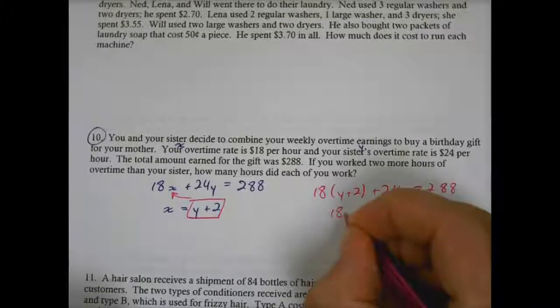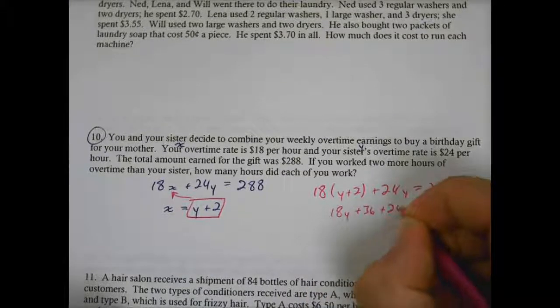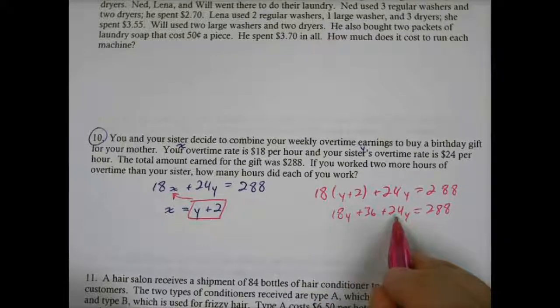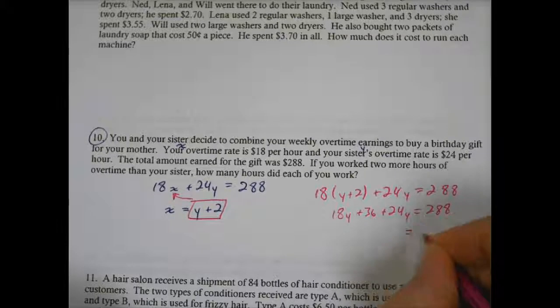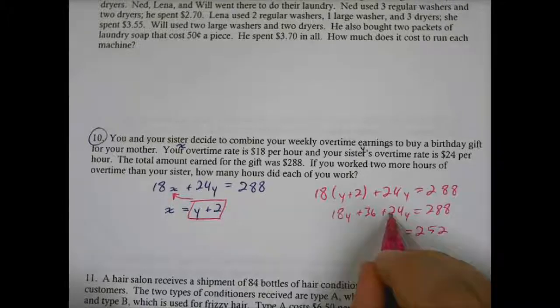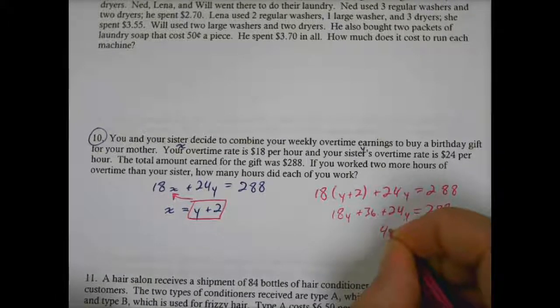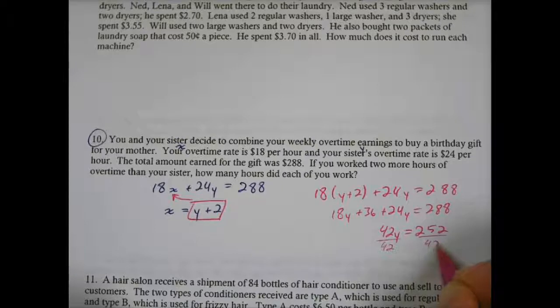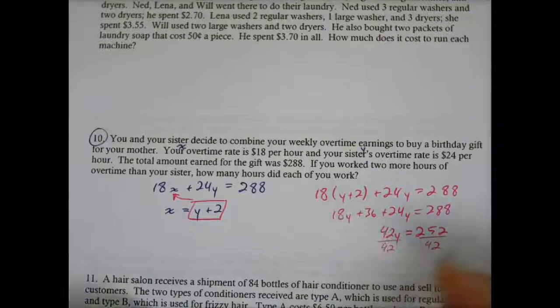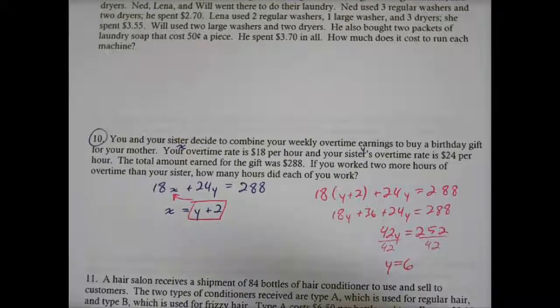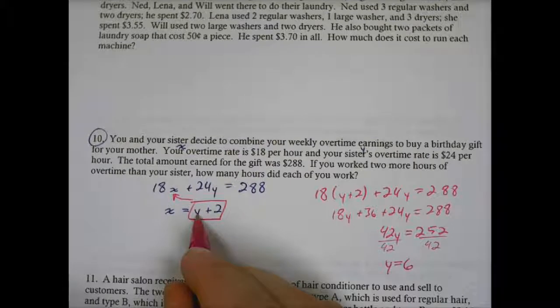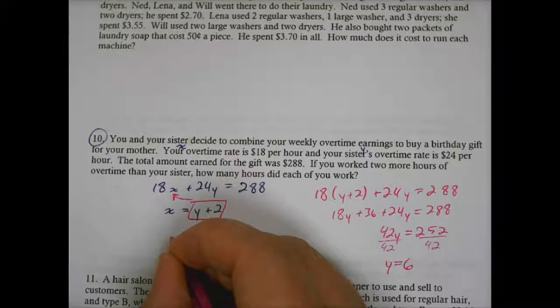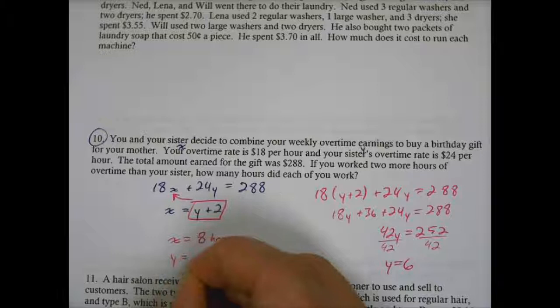You can distribute the 18, so you have 18Y plus 36 plus 24Y equals 288. 18Y and 24Y are alike terms. You can subtract 36 to the other side, so that gives us 252. 18 and 24 is 42Y. And we need to divide both sides by 42. So Y equals 6. So if you know Y is 6, then going back to this equation, you worked 6 plus 2 hours, so you worked 8 hours, so X would be 8 hours, and your sister worked 6 hours.